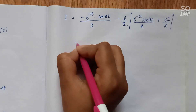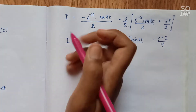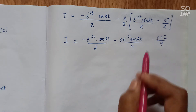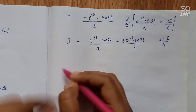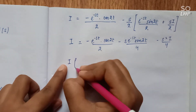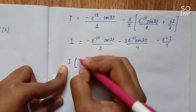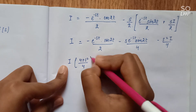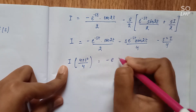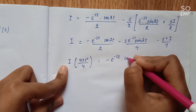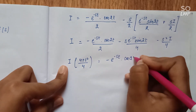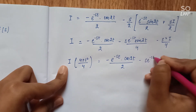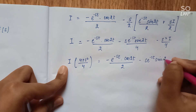Substituting back, we have I equal to the expression, and moving the I term to the left side and taking I as common gives us (4 + s²)/4 times I equal to -e^(-st)·cos(2t)/2 minus s·e^(-st)·sin(2t)/4.